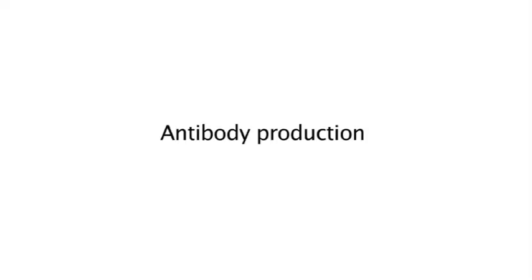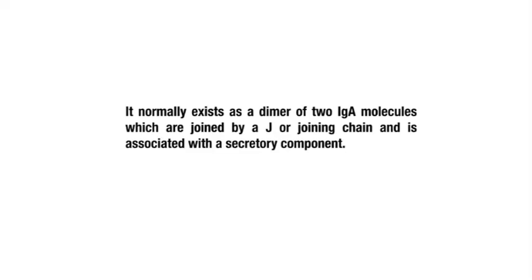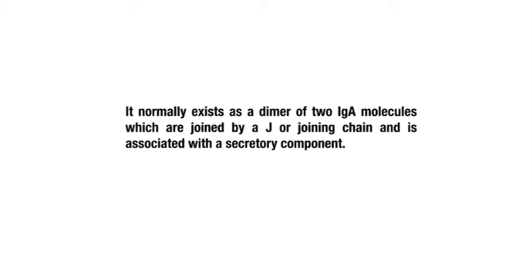Then we will come to antibody production. Secretory IgA antibody can be produced in plants. The secretory IgA protects against dental caries caused by Streptococcus mutans. It normally exists as a dimer of two IgA molecules which are joined by a J or joining chain and is associated with a secretory component. The cDNAs for the heavy chain, light chain, J chain, and secretory component were expressed in four different transgenic tobacco lines under the control of 35S promoter.